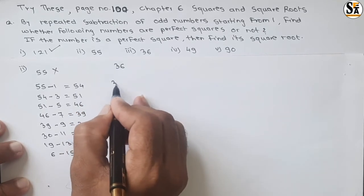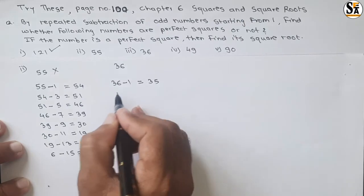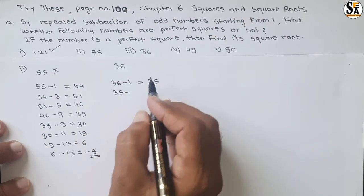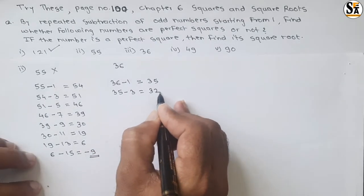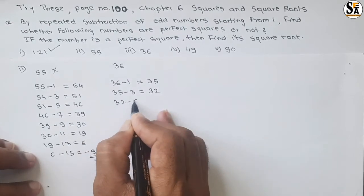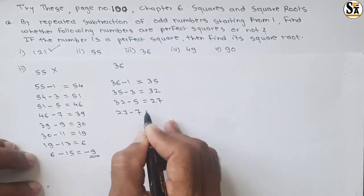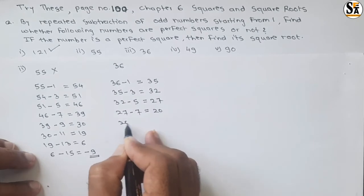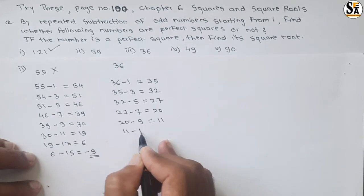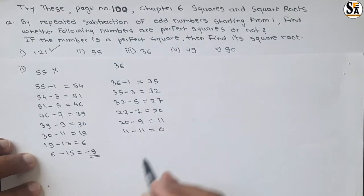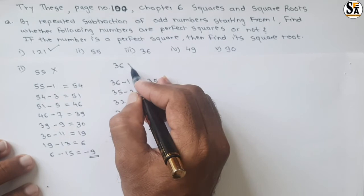For 36, start with odd number 1: 36 − 1 = 35, 35 − 3 = 32, 32 − 5 = 27, 27 − 7 = 20, 20 − 9 = 11, 11 − 11 = 0. We get 0 at the end.